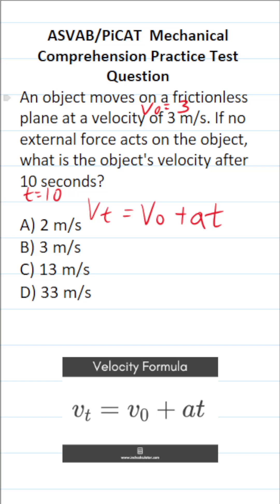Now this is a trick problem because it doesn't explicitly tell you this, but it doesn't say the object has any acceleration at all. So we know a is going to be 0.